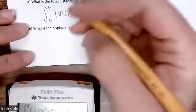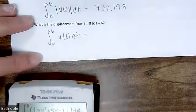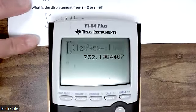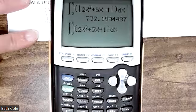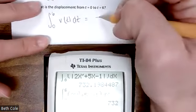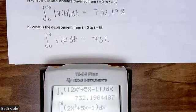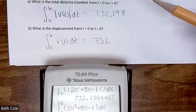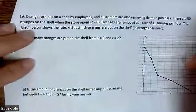Displacement is the same setup but without the absolute value. You can't insert an absolute value into an existing expression on the calculator, but you can delete it — hover over the absolute value bar and hit the 'del' key. The total distance is bigger than displacement because distance treats all movement as positive. Units would be miles, kilometers, feet, or whatever distance unit applies.